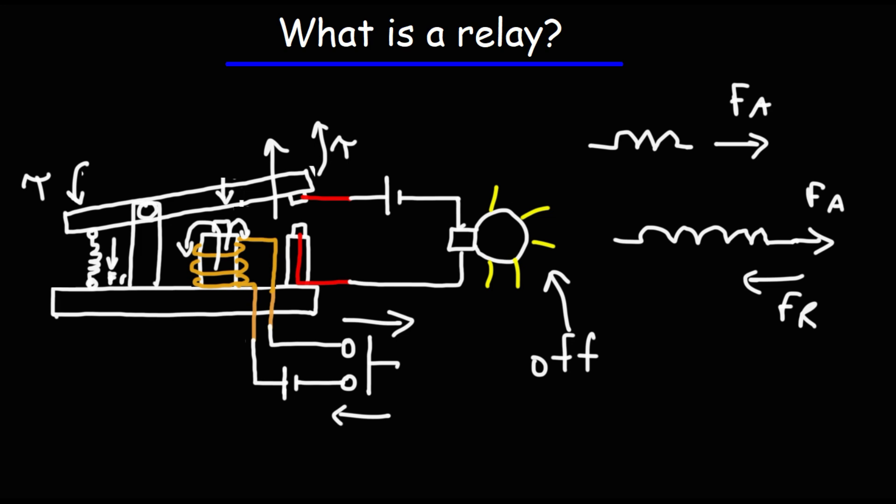Now this particular relay is what you will call a normally open relay. There's also the normally closed relay, where if you would activate circuit one, it would go from a closed position to an open position. That is circuit two.